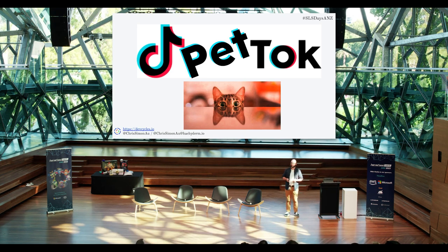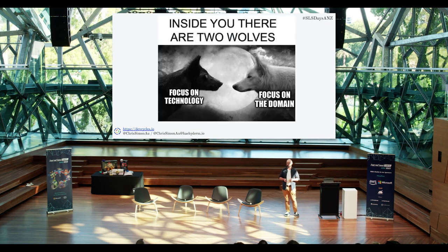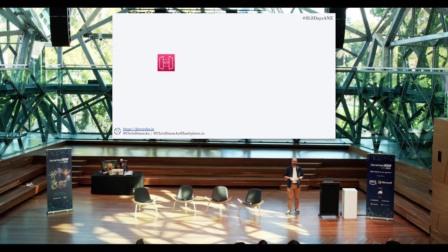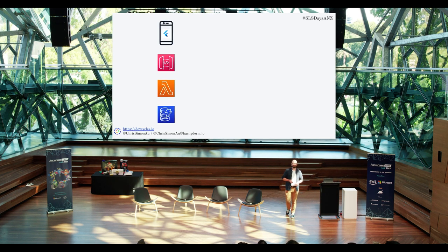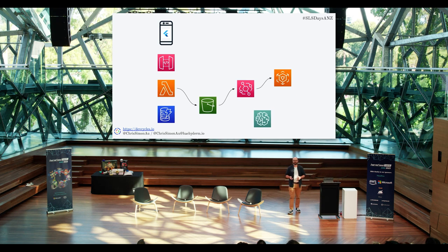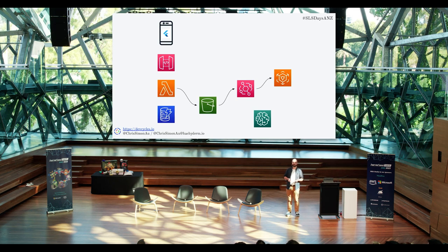To explain domain-driven design in the context of Pet Talk, we're going to imagine that inside you there are two wolves — one with a focus on technology, one with a focus on the domain. The technology-focused one is probably the dominant one for most of you today. You've just been to Serverless Days. You're going to throw an API gateway, Lambda, DynamoDB, a Flutter native app, an Elemental Media Converter for video, S3, EventBridge to wire it all up, and some AI. This is the technology focus of the architecture. You need this stuff. It's really important. But the domain focus comes at it from a different angle.